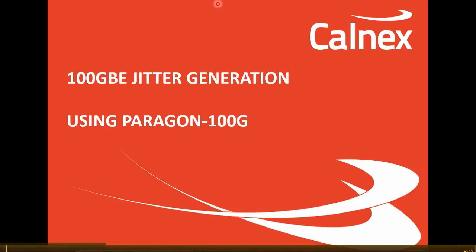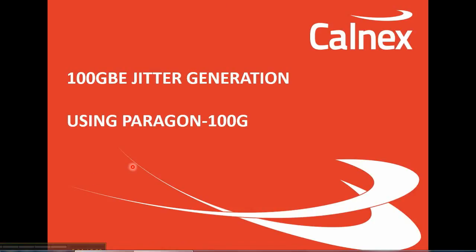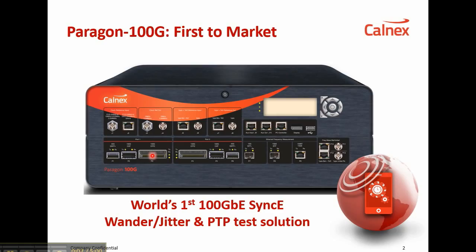Today we're going to show you how easy it is to perform a jitter generation test using the Paragon 100G. In case folks haven't seen the Paragon 100G, this is what it looks like. It supports SyncE Jitter Generation and SyncE Jitter Tolerance, plus PTP and SyncE Wander measures to 100G Ethernet and beyond.